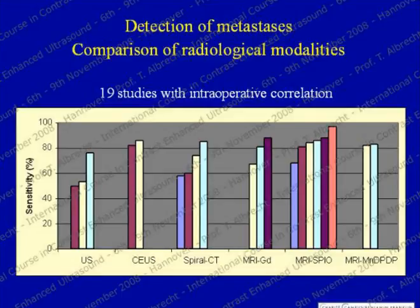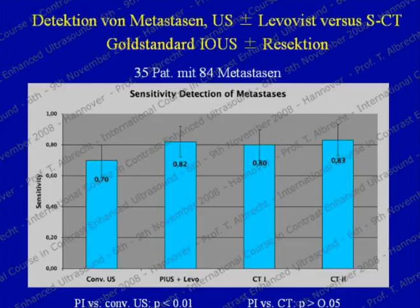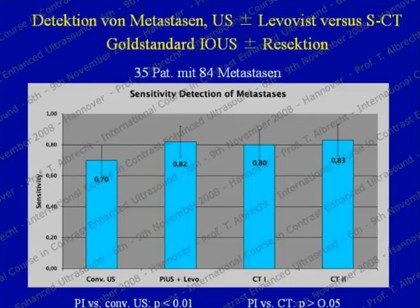In our own study of 35 patients with a total of 84 metastases, all underwent intraoperative ultrasound with or without resection. Sensitivity was 70% for conventional ultrasound, 82% for contrast-enhanced ultrasound, and 80% and 83% respectively for CT readers 1 and 2. So almost identical results for CT and contrast-enhanced ultrasound.